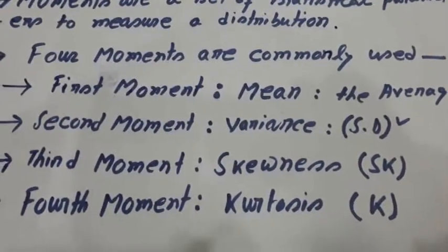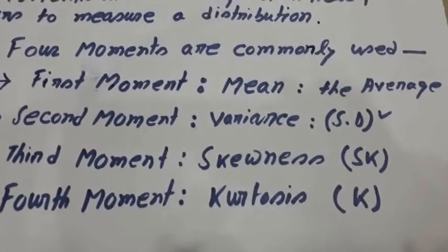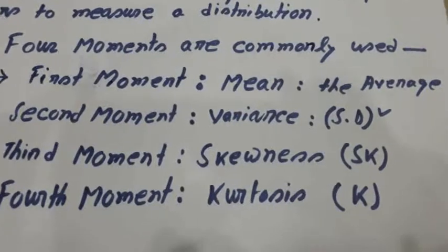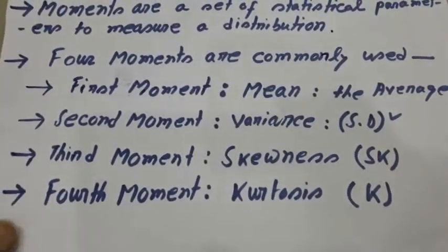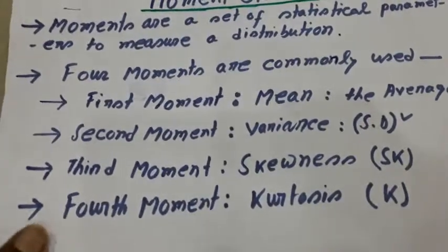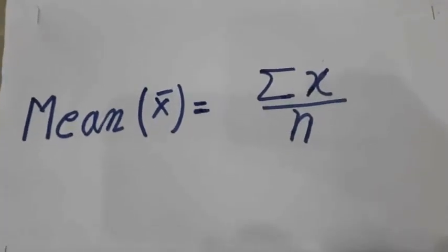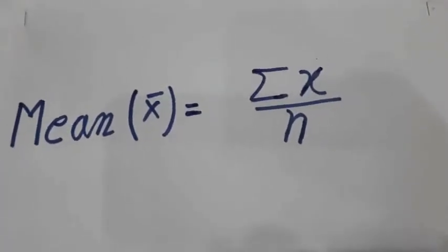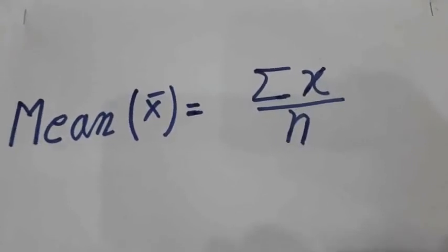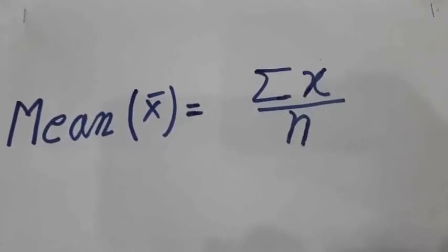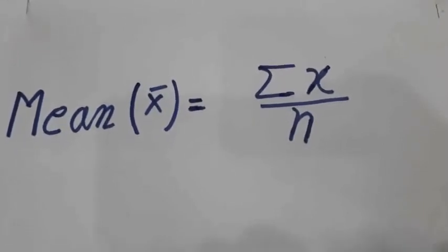First moment is known as mean, mean means average which is denoted by x bar, and this mean is defined by x bar equals to summation x by n. This x represents the observation and n represents the number of observations.